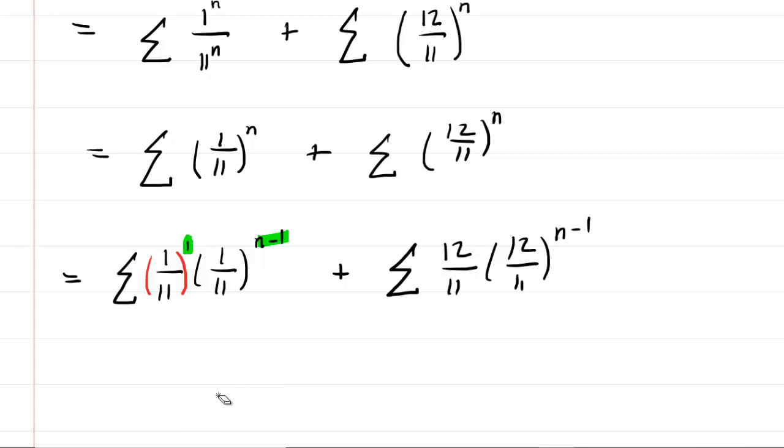Now these are both finally written in the standard geometric series form. You probably have learned that a geometric series can be written as a constant a multiplied by a common ratio r, all of which is raised to the power of n minus one. Furthermore, you've probably learned that if the absolute value of r is less than one, then your series is convergent.